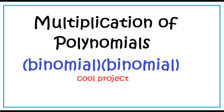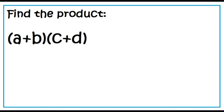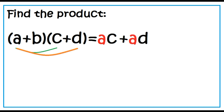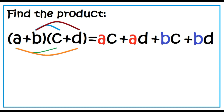Binomial times binomial. To multiply a binomial by another binomial, multiply each of the terms in the first factor by each of the terms in the second factor. A times C, plus A times D, plus B times C, plus B times D. The product is AC plus AD plus BC plus BD.